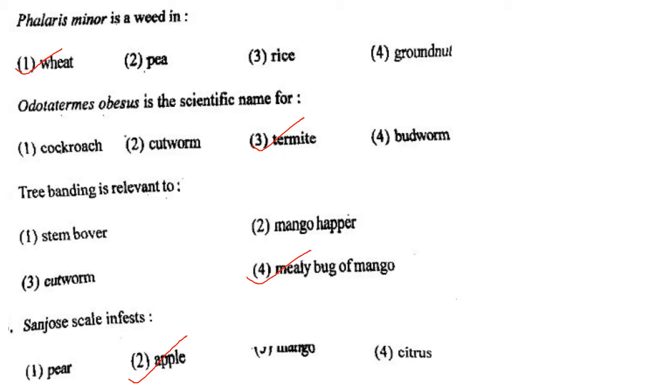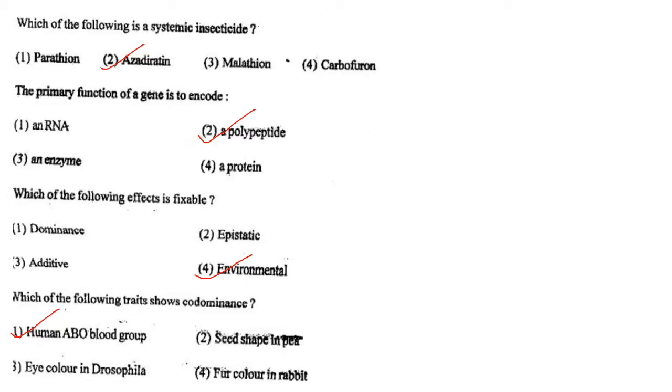Next one: San Jose scale infects option 1, pear; option 2, apple; option 3, mango; option 4, citrus. Answer is option 2: apple.